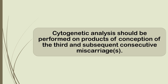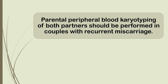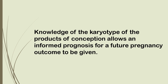Karyotyping. Cytogenetic analysis should be performed on products of conception on the third and subsequent consecutive miscarriages. Parental peripheral blood karyotyping of both partners should be performed in couples with recurrent miscarriage where testing of products of conception reports an imbalanced structural chromosomal abnormality. Knowledge of the karyotype of the products of conception allows an informed prognosis for a future pregnancy outcome to be given.